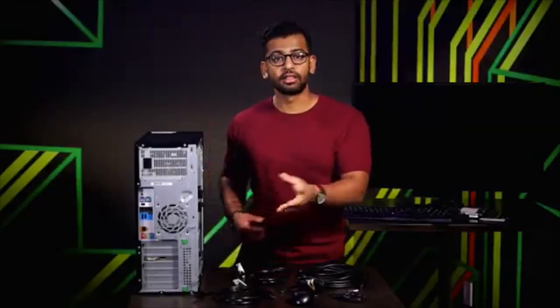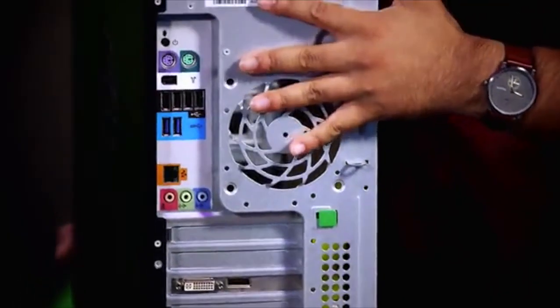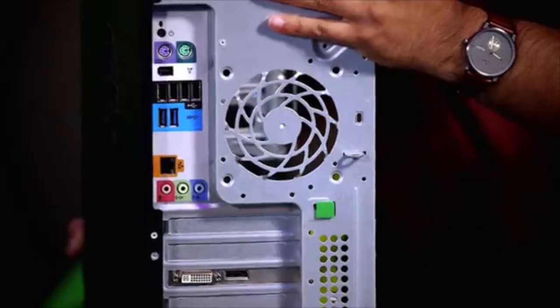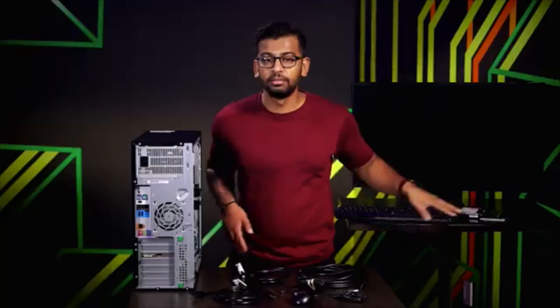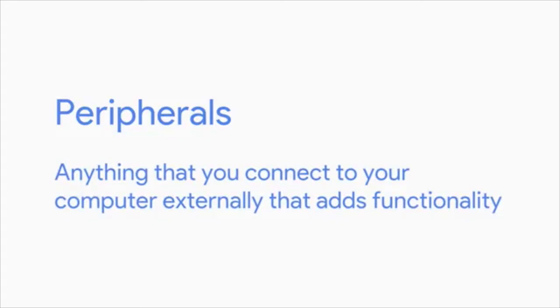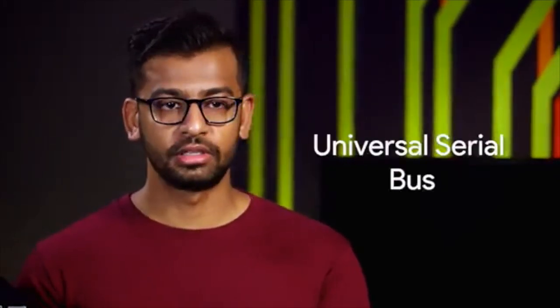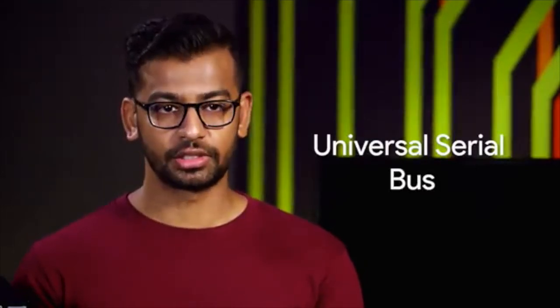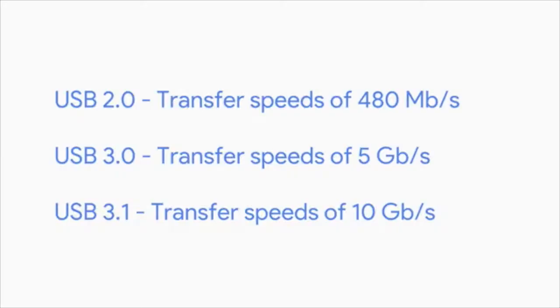Let's take a look at the back of our computer again. Here you'll see lots of connectors or ports where you can plug in different objects like a mouse, keyboard, and monitor — these are known as peripherals. A peripheral is basically anything you connect to your computer externally that adds functionality. USB, also known as Universal Serial Bus devices, are the most popular connections for our gadgets. You'll most commonly encounter USB 2.0, USB 3.0, and 3.1 in today's systems. USB 2.0 transfers at 480 megabits per second, USB 3.0 at 5 gigabits per second, and USB 3.1 at 10 gigabits per second.